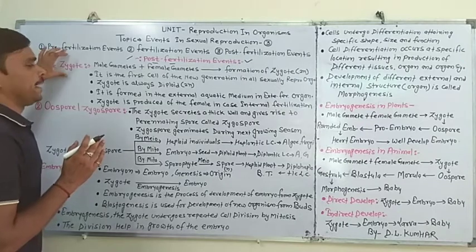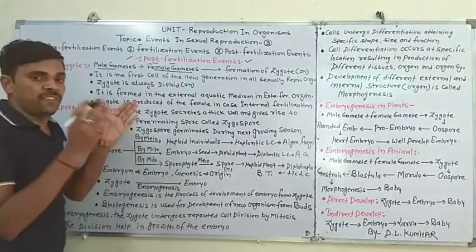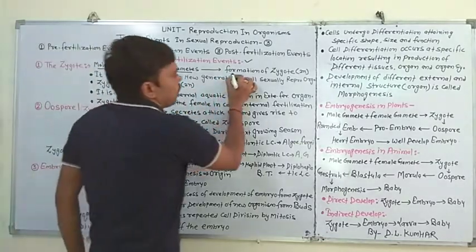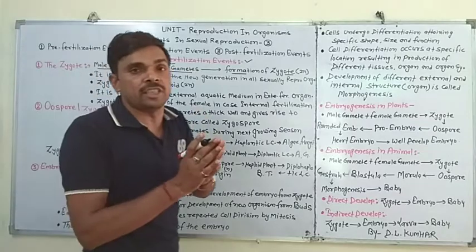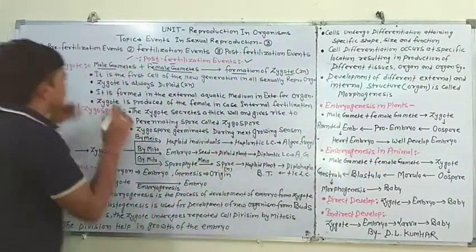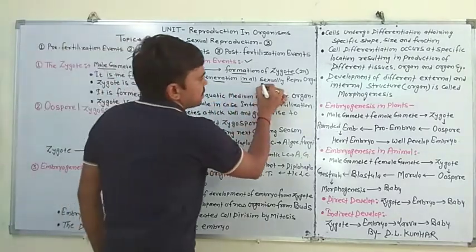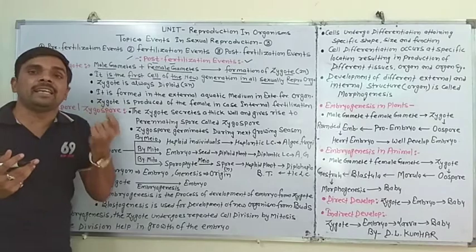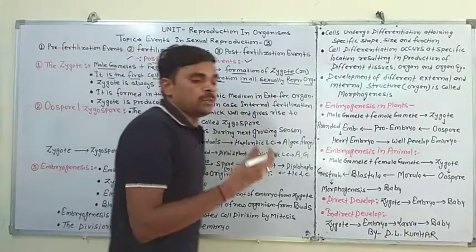First of all we discuss the Zygote. Male gamete and female gamete के fusion से formation of Zygote होता है। जिसे हम fertilization कहते हैं, और after fertilization, formation of Zygote होती है। It is the first cell of the new generation in all sexual reproductive organisms.